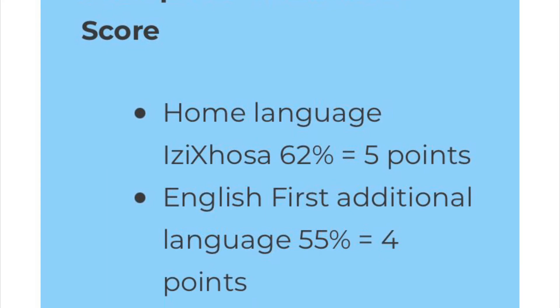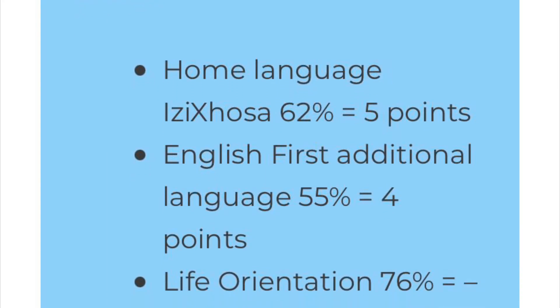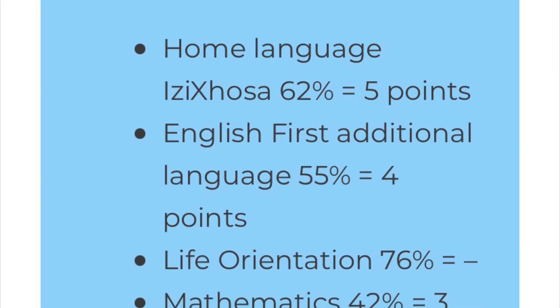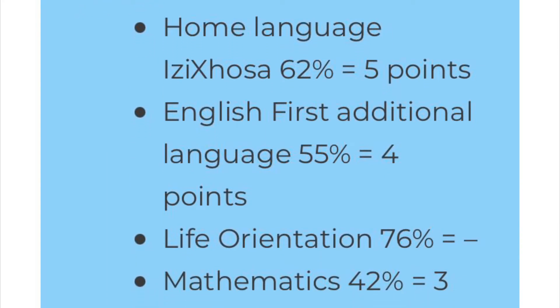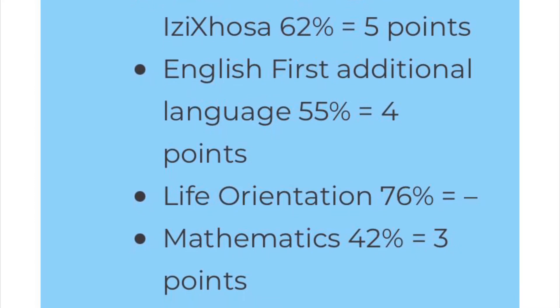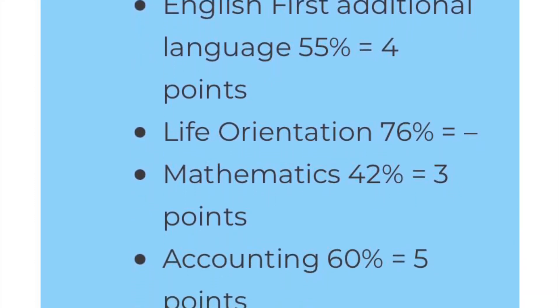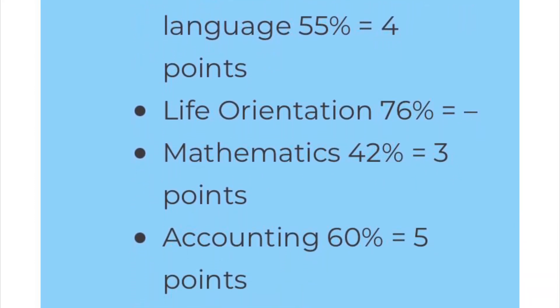This is an example of how you would calculate your scores. You can see that Life Orientation has a dash, because you do not include it in your APS score calculation.